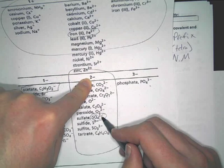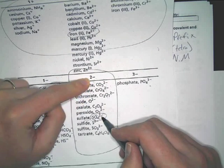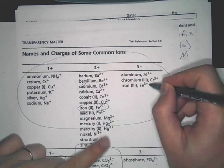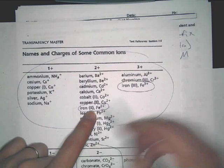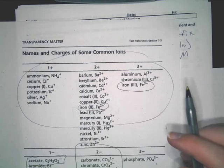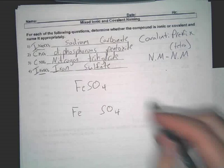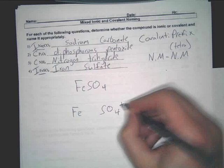Are all transition metals positive two? No. They can be a lot of different things. If you look, this chart right here actually shows you that iron could be plus two or plus three. And you have to figure out which one it is. This one's a plus two. Yeah.